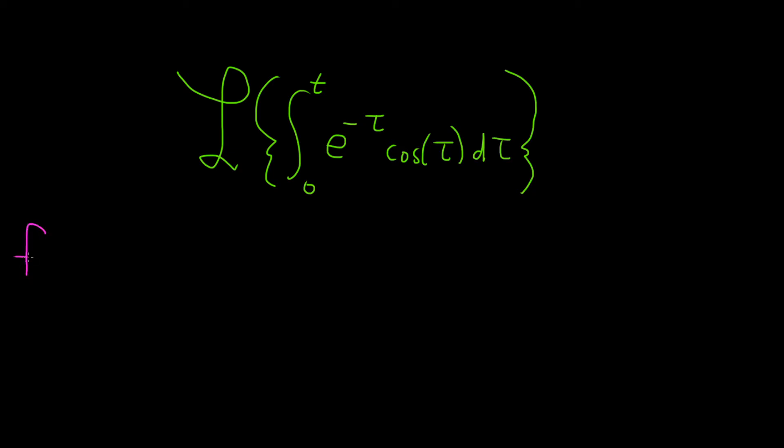Recall that the convolution of f with g is defined to be the definite integral from 0 to t of f of tau times g of t minus tau d tau.